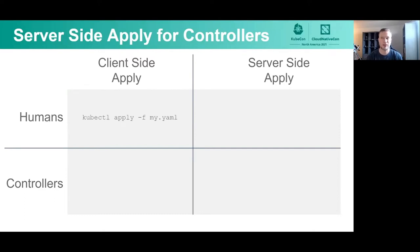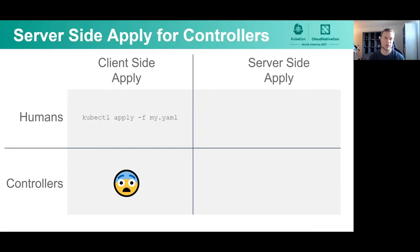In the original client-side implementation of apply, you could access it through kubectl apply, and you would provide a file that included the subset of fields of the object that you cared about. Whenever you changed any of those values and called apply again, it would tell the server to change just that particular value. There was no support for controllers for this — no reasonable way to use it. All of the apply logic was bundled directly into kubectl. The only way to even theoretically access it would have been to shell out to kubectl, but kubectl is a stateful thing, and controllers sometimes need to be HA. It just really wasn't a good fit.